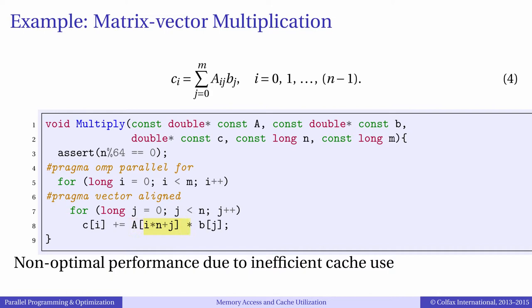But for vector b temporal locality is important because every element of b is used m times. As we mentioned, vector b is assumed to be so large that it does not fit in cache. In an optimal solution vector b will be read from memory only once and each element will be reduced from cache m times.